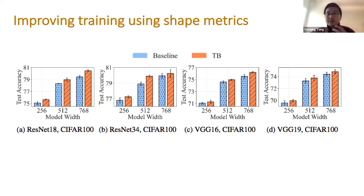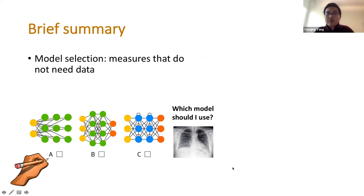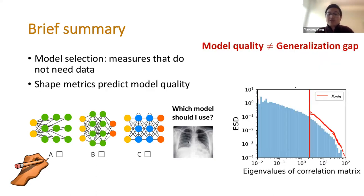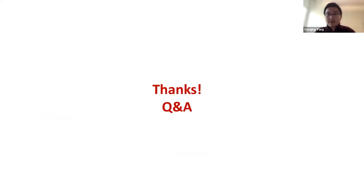To briefly summarize this final part: we focus on generalization measures that do not need access to data. Shape metrics derived from spectral analysis of weight matrices can measure model quality instead of the generalization gap, without needing access to training or testing data. Thank you so much.